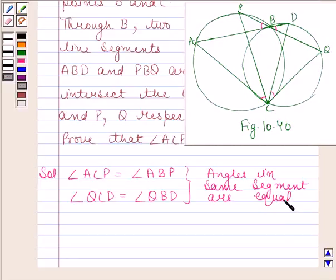Angle ABP is equal to angle QBD because these are vertically opposite angles.